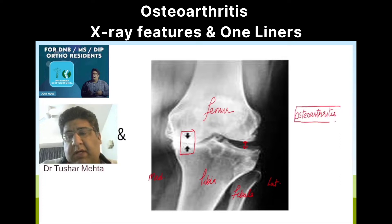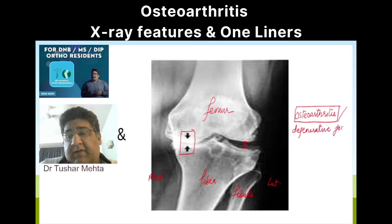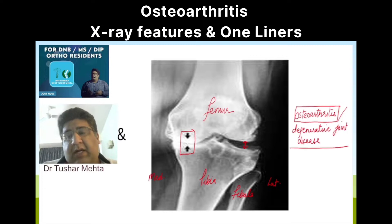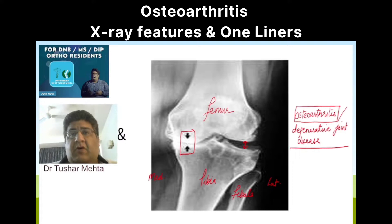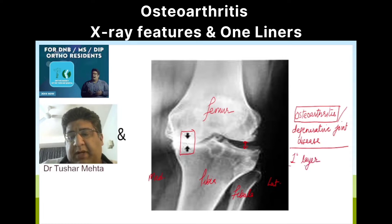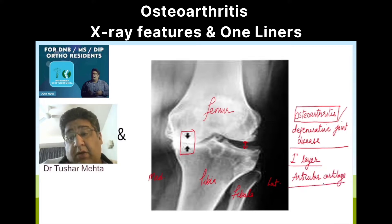By now you all must have understood that we are dealing with a topic called osteoarthritis, which is better called degenerative joint disease. It is primarily an old age problem — a senility, senescence, aging, wear-and-tear related issue — where the primary layer involved in the pathogenesis is what is called articular cartilage.